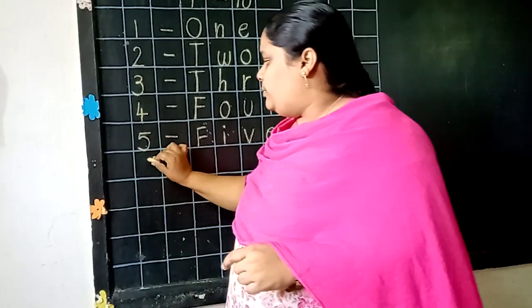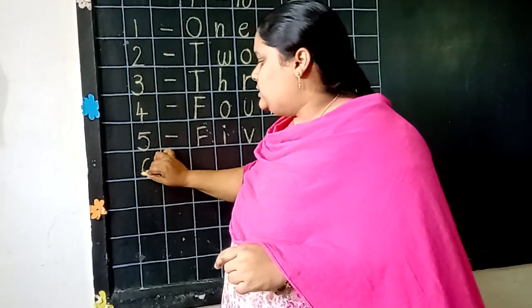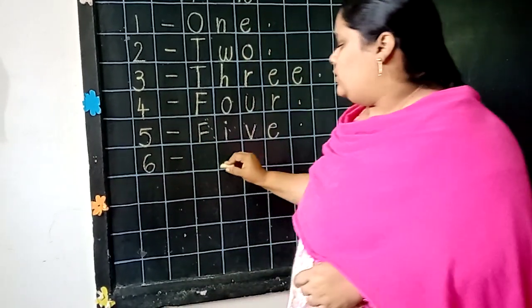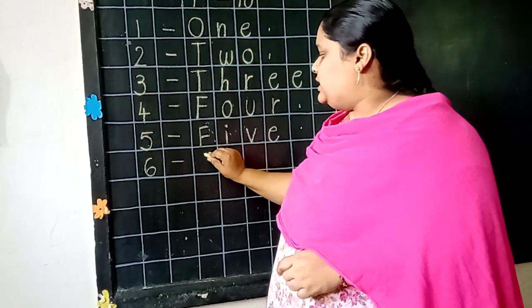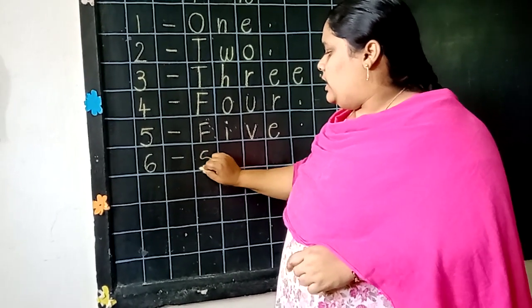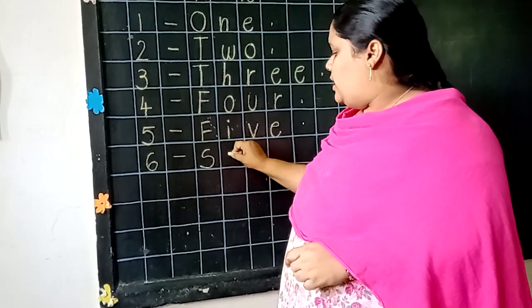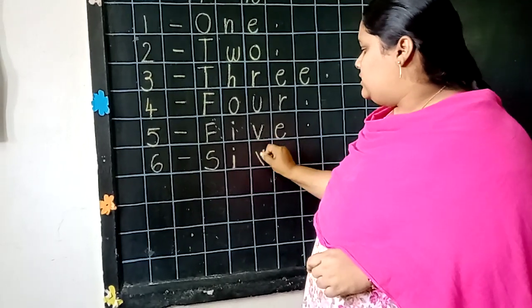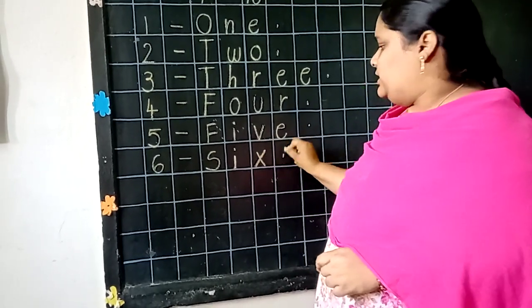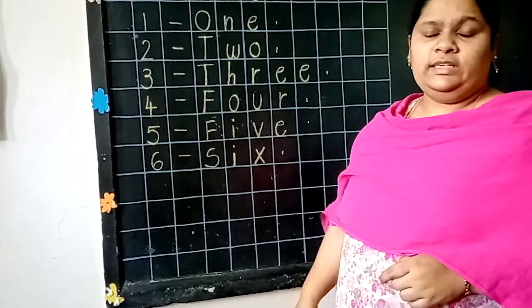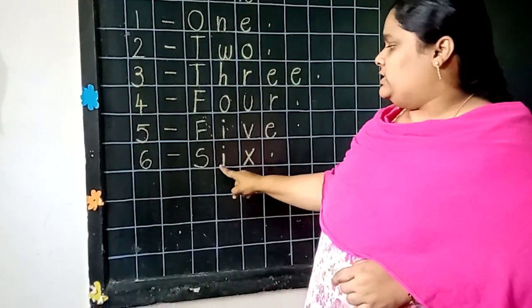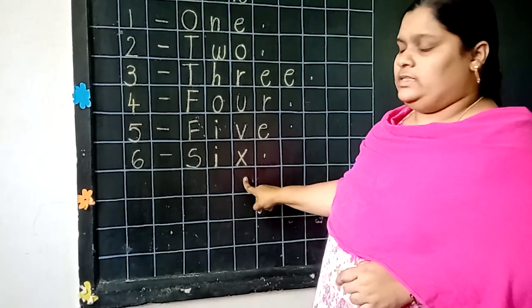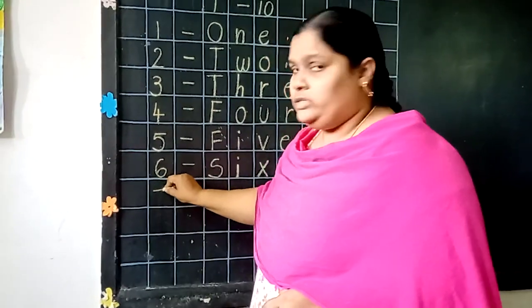Now, next number is 6. Say the spelling of 6. S, I, X. 6. What is the spelling of 6? S, I, X. 6. Next.